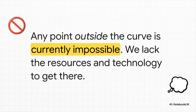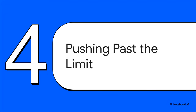What about a point outside the curve? Let's say 200 tons of wheat and 100 tons of milk. With our current resources and technology, that's just a dream — it's impossible. For now, anyway. But does that mean we're just stuck with these limits forever? No way. Economies can grow. They can become way more productive, and they can absolutely push past their old frontiers.